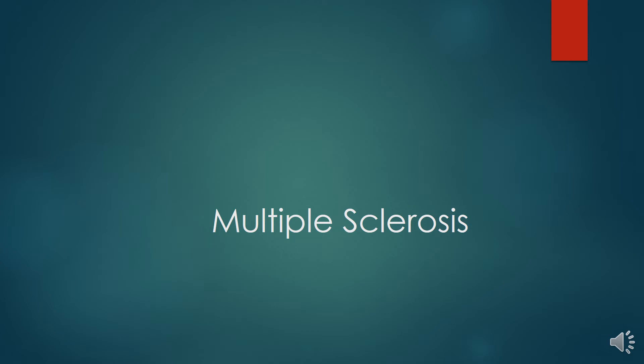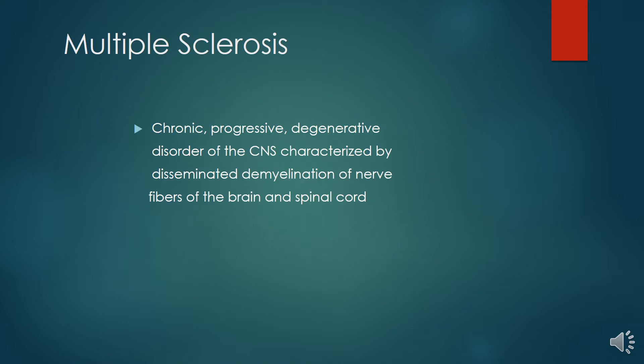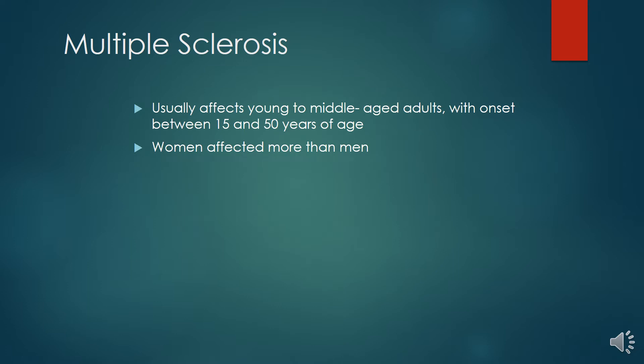Multiple Sclerosis is a chronic progressive degenerative disorder of the CNS characterized by disseminated demyelination of the nerve fibers of the brain and the spinal cord. It usually affects young to middle age adults with onset between 15 to 50 years, and women are affected more than men.